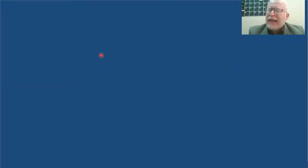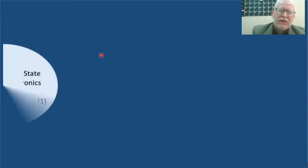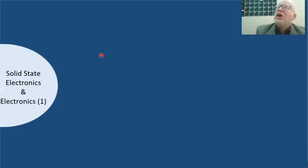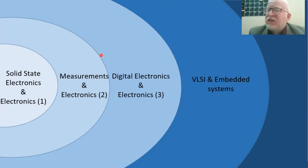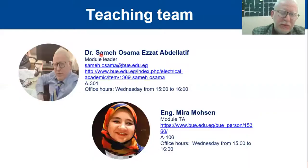So let's turn more technical. First, let me express the curriculum in the electronic part. I believe you already saw this slide maybe three or four months ago in October when we started the solid state electronics course. We have solid state electronics and electronics one in year one, then electronics two and measurements in year two, then electronics three and digital electronics in year four, and finally VLSI and embedded systems in your final year. This is the overall curriculum. Solid state is now the past, and we are now in the electronics one course — your first course in the circuit perspective of electronics.